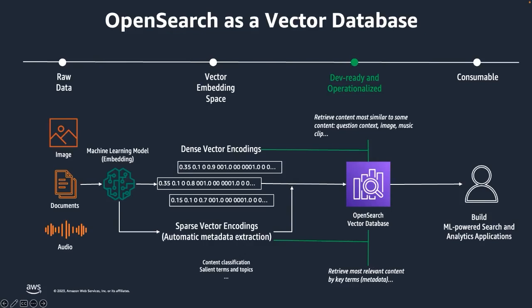How is this done? Raw data such as images, documents, and audio files are converted to vector embeddings using various transformer models deployed on Amazon SageMaker. During vector embedding, each word or document in the raw data is represented by a dense vector, with each dimension corresponding to a feature or attribute associated with the document. The vector captures the relationship between the word or document based on context and meaning. The embedding depends upon the kind of model you use, such as Word2Vec, CLIP, or BERT. Vector representations of the data are then stored in OpenSearch in an indexing structure that is optimized for search.